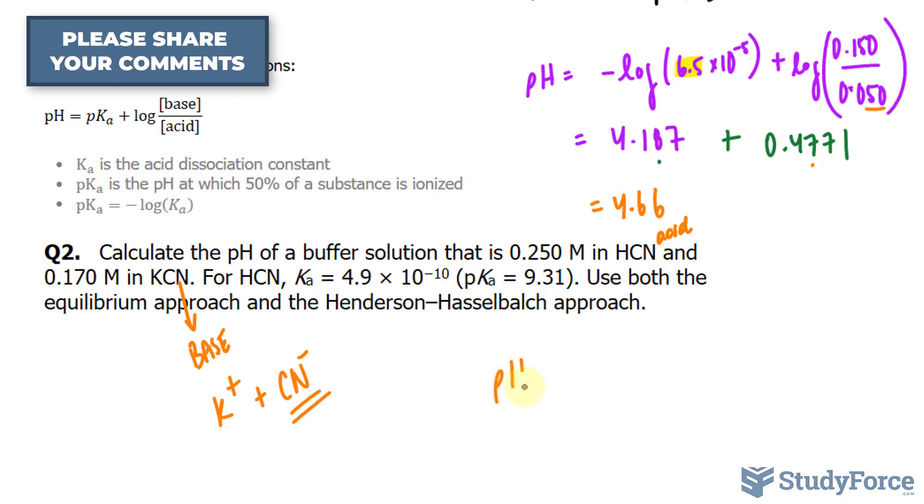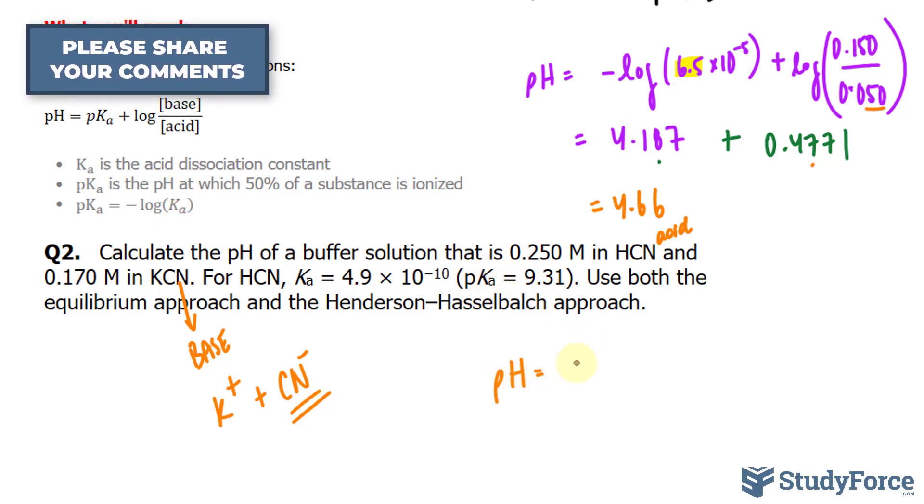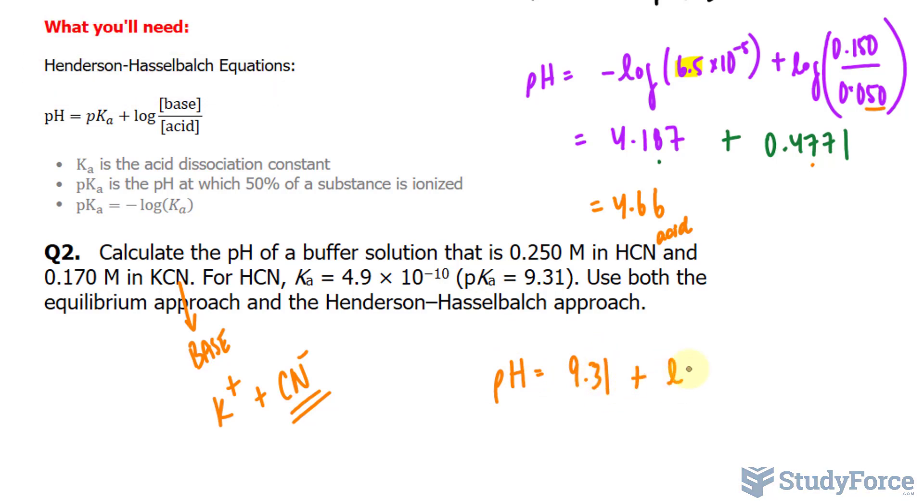So we have pH is equal to our pKa, 9.31, plus log of our base, its concentration is 0.170 over 0.250.